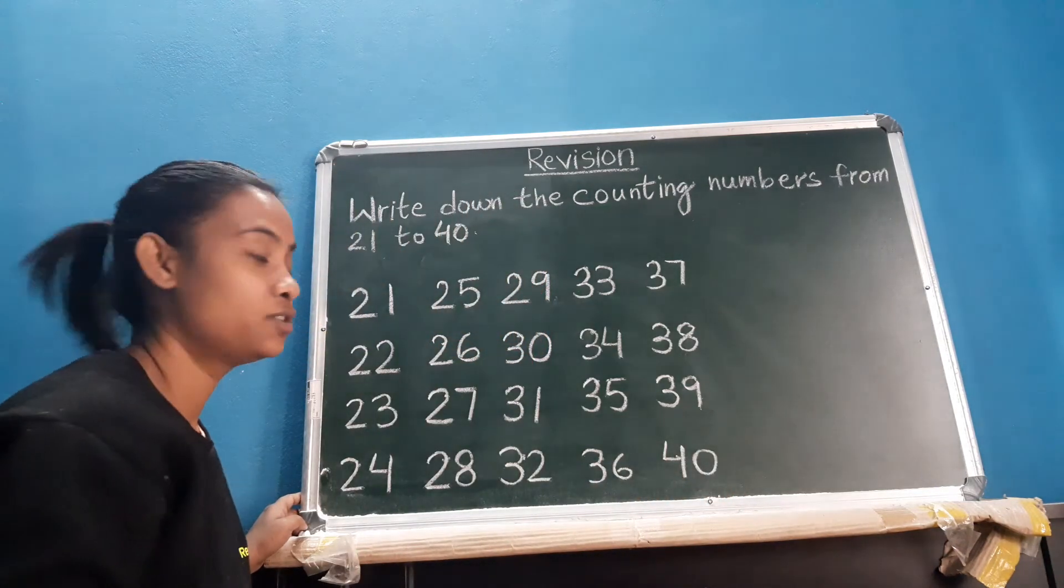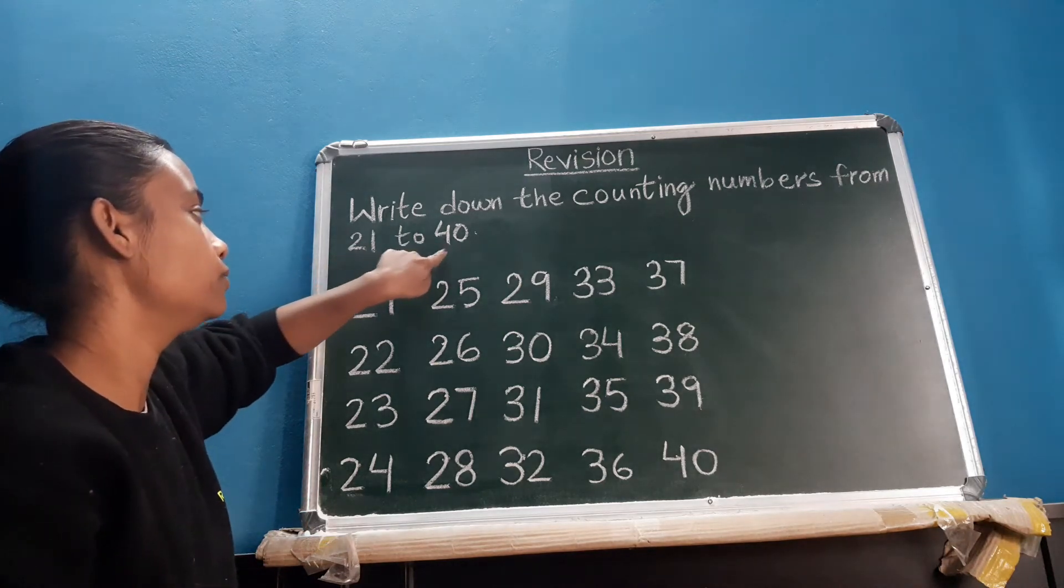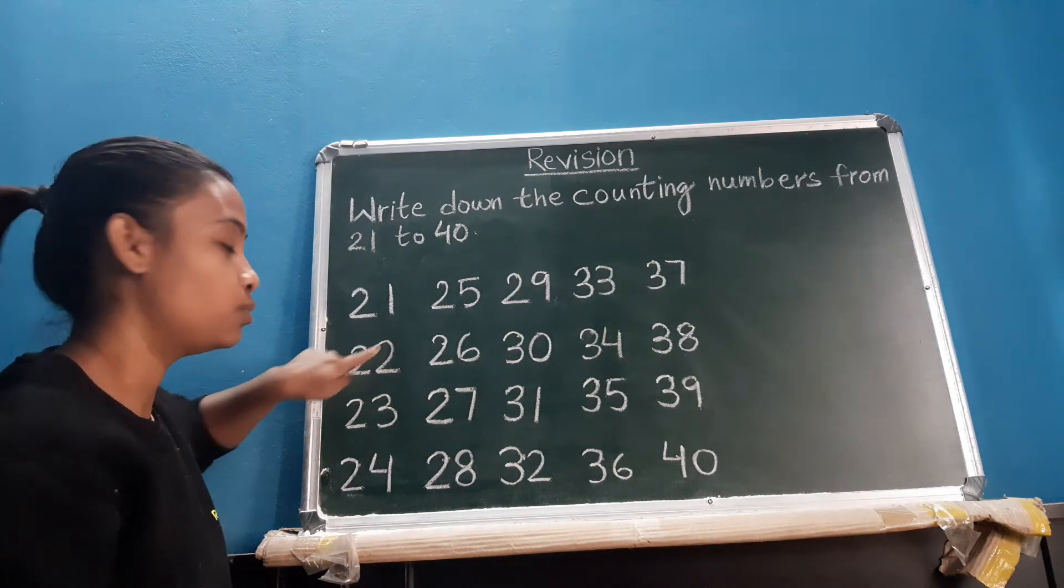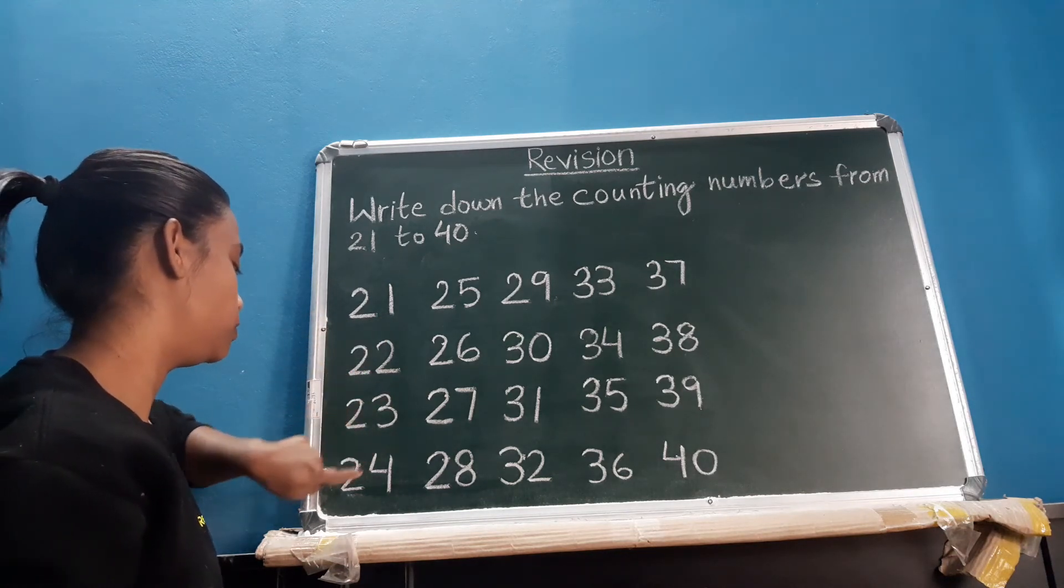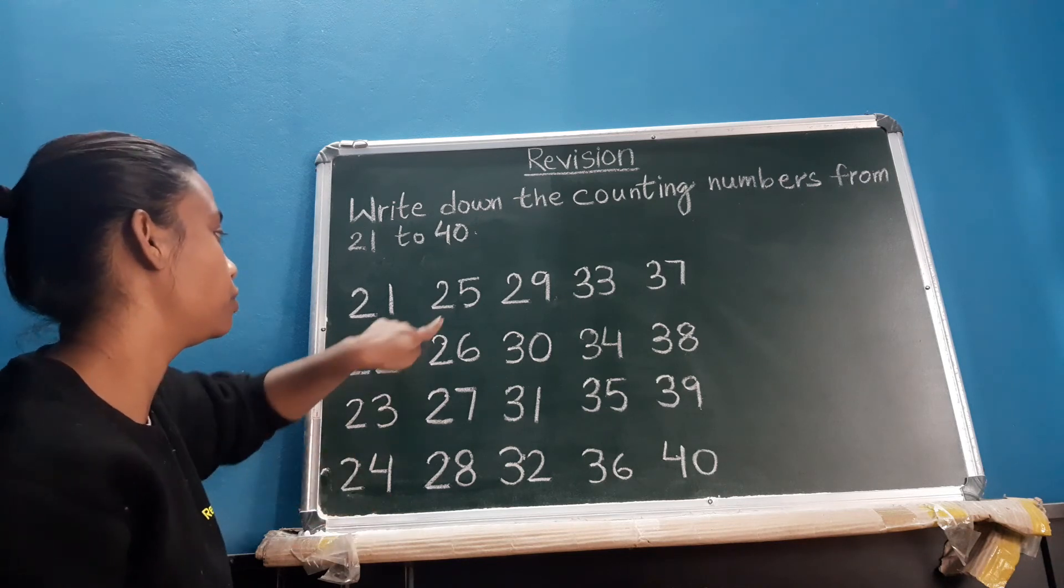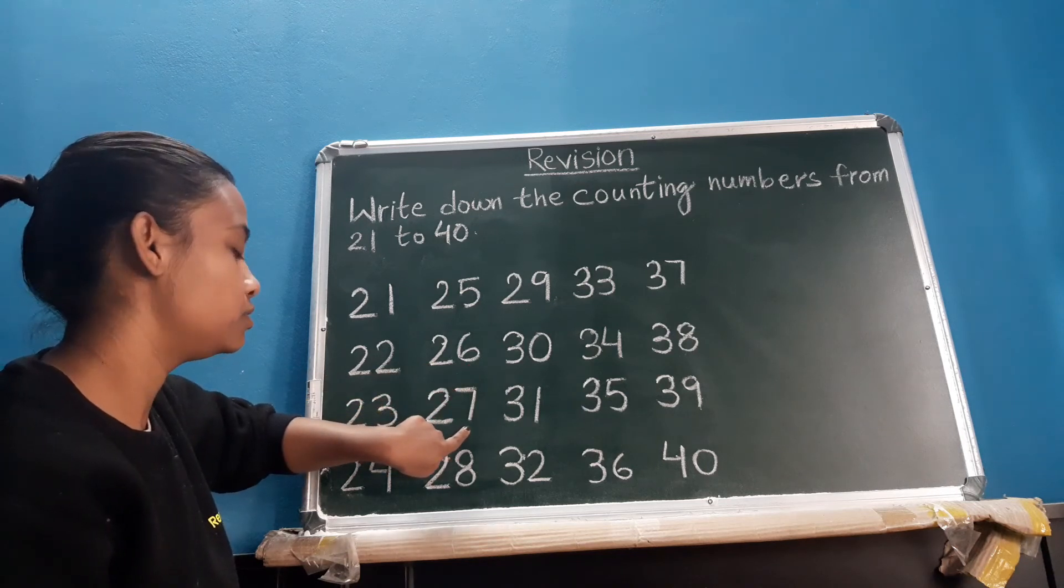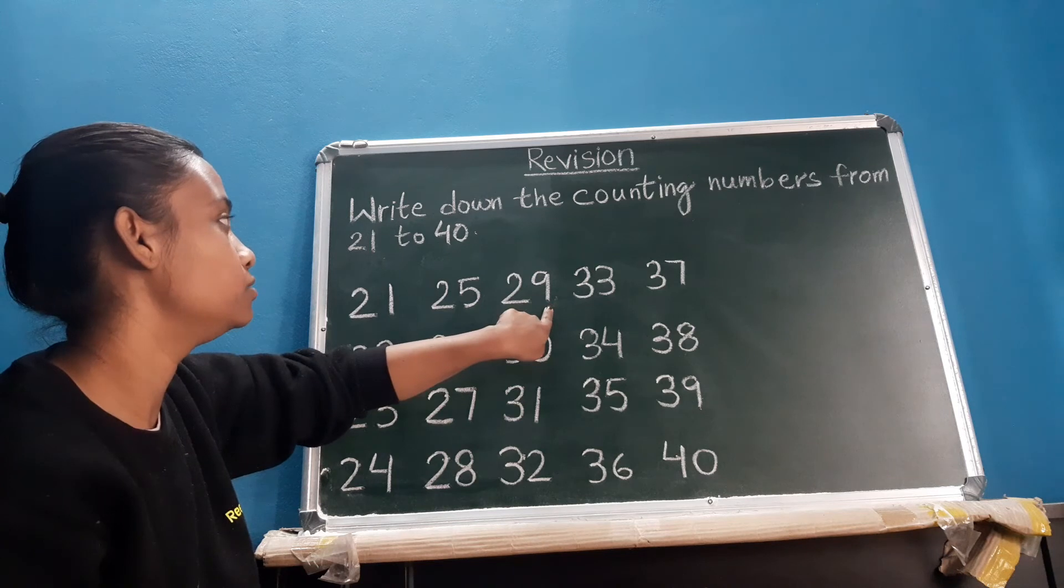Okay children, so this is the counting numbers starting from 21 to 40. 21, 22, 23, 24, 25, 26, 27, 28, 29.